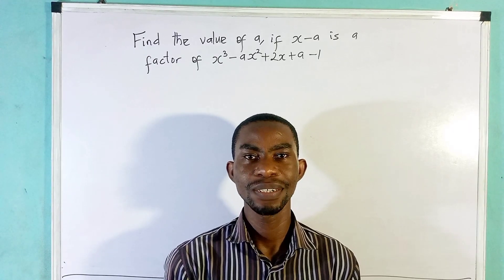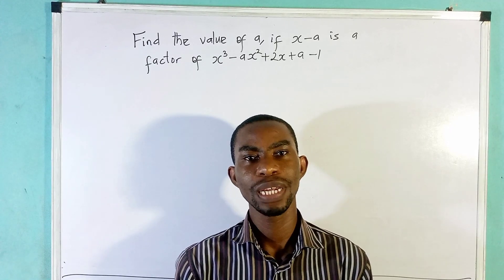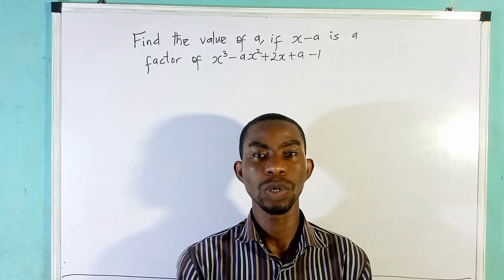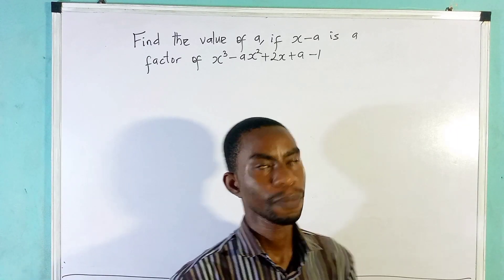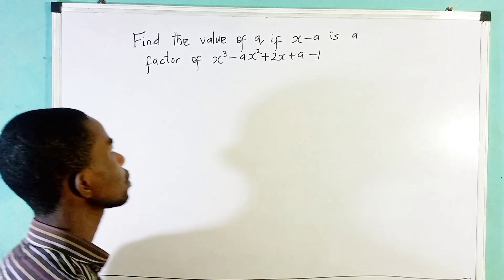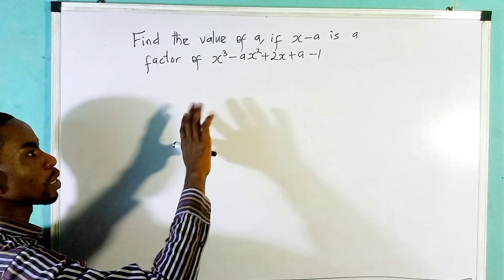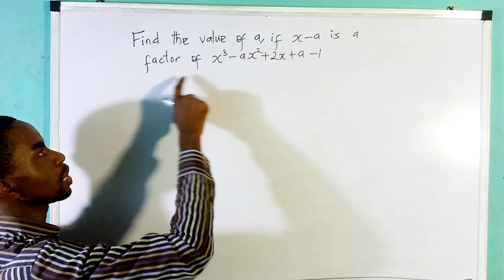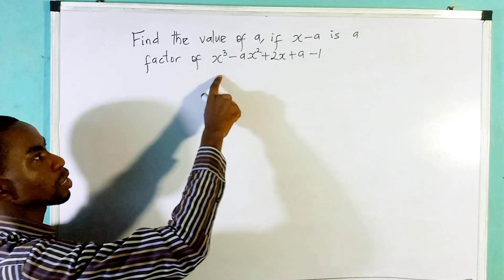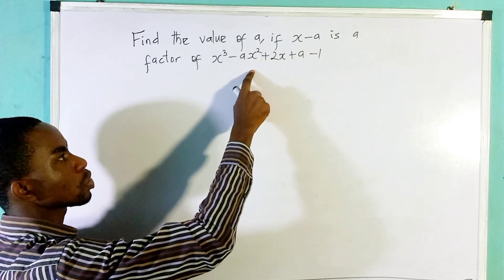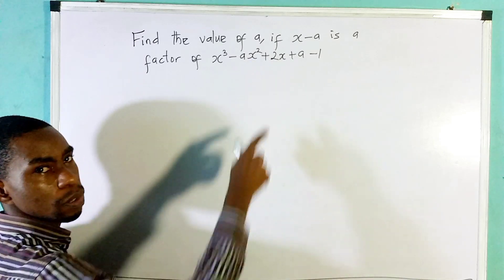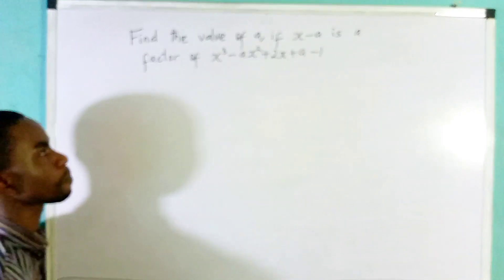Hello, welcome to my YouTube channel. Today we are looking at a question on polynomials. The question says: find the value of a if x minus a is a factor of x cubed minus a squared plus 2x plus a minus 1.